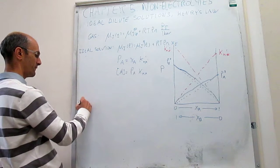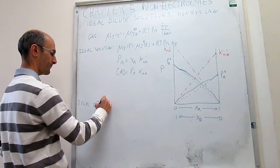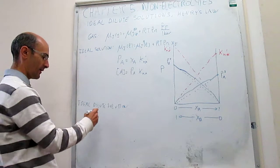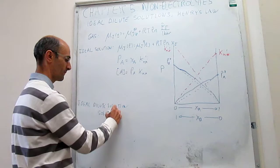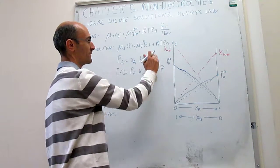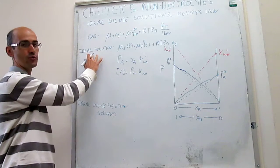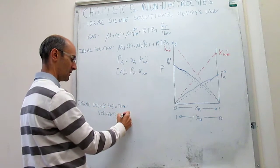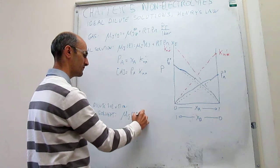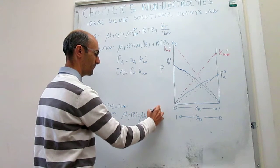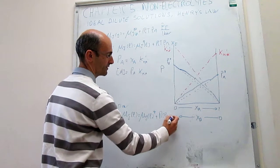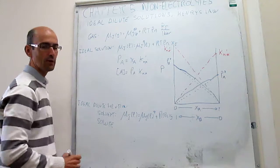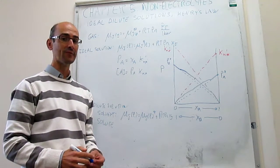For an ideal dilute solution, you have two expressions — one for the solvent and one for the solute. For the solvent, which follows Raoult's law, the chemical potential is exactly identical to what you had in an ideal solution where Raoult's law is satisfied throughout. That is: μ(J, liquid) = μ*(J, liquid) + RT ln(x_J). We then ask what happens for the solute, where instead of Raoult's law, Henry's law is satisfied.